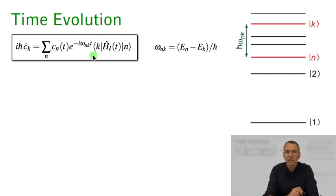And omega n k, that was just the difference energy between the n-th state and the k-th state in our system.